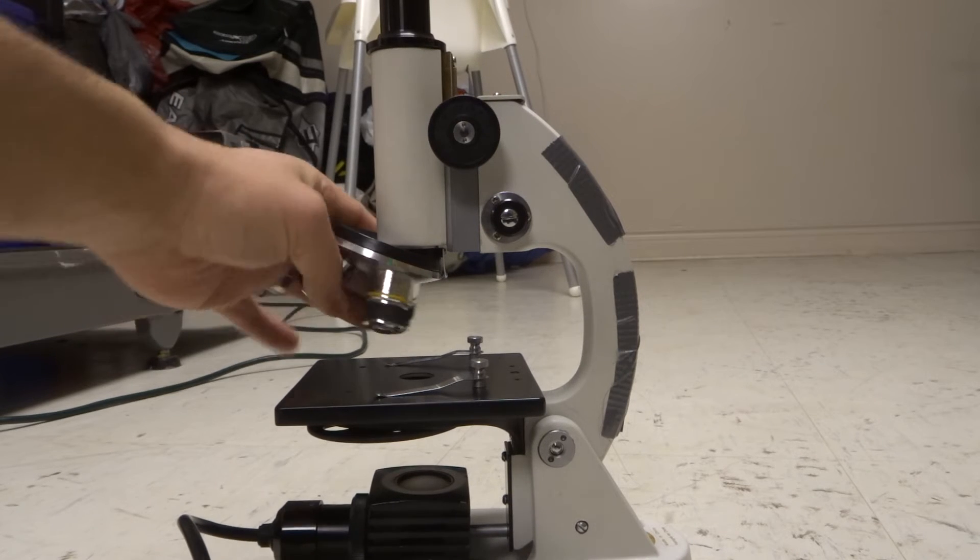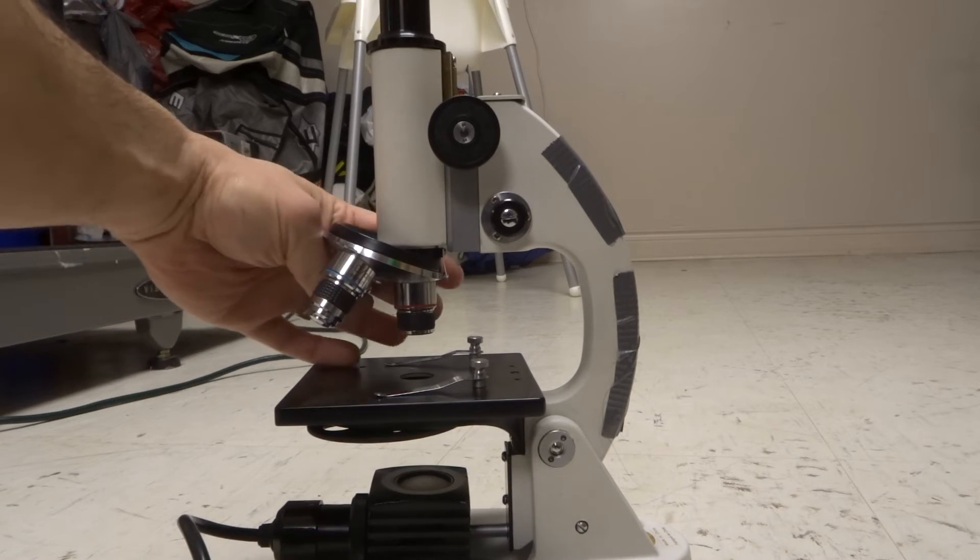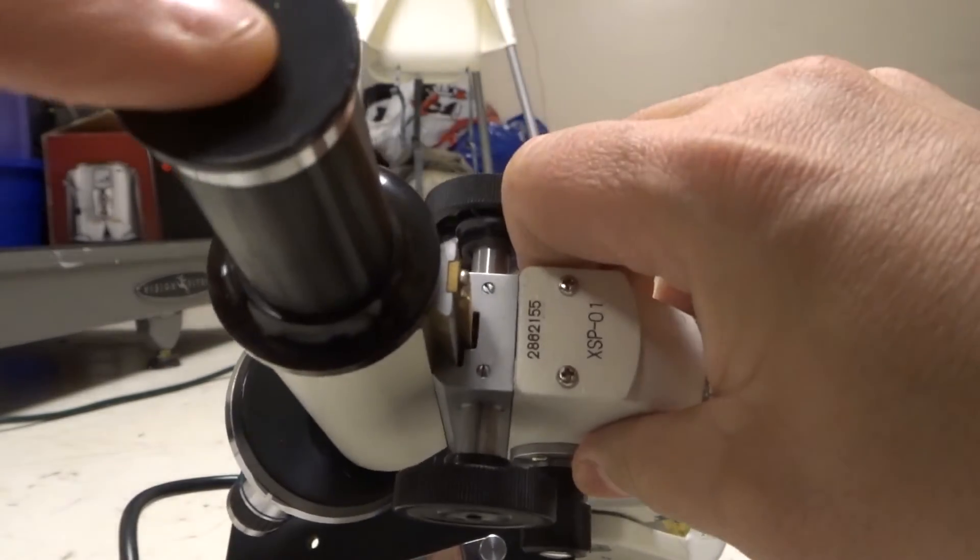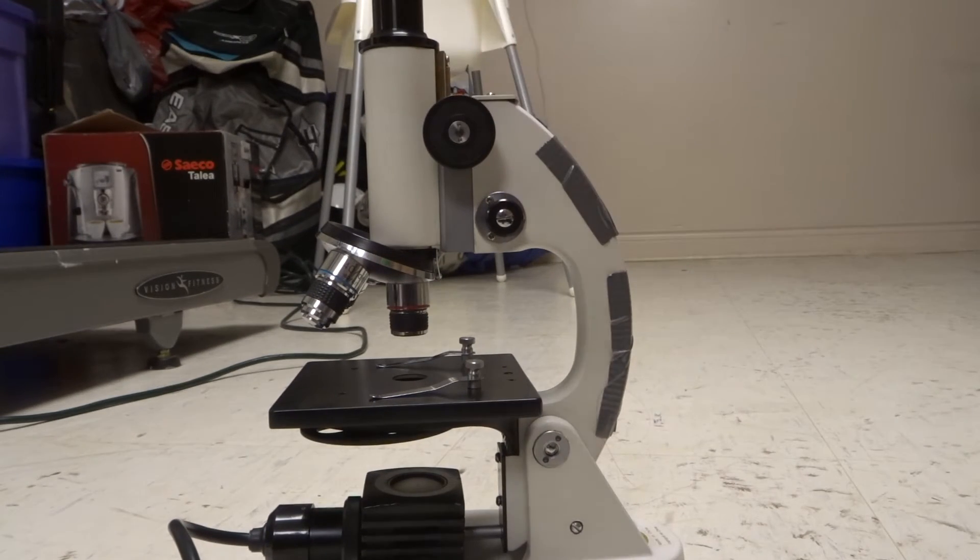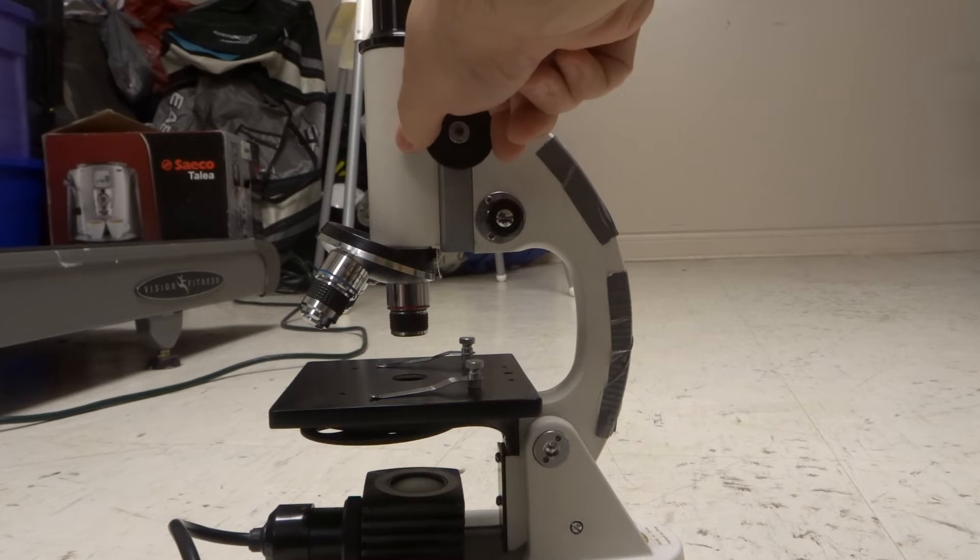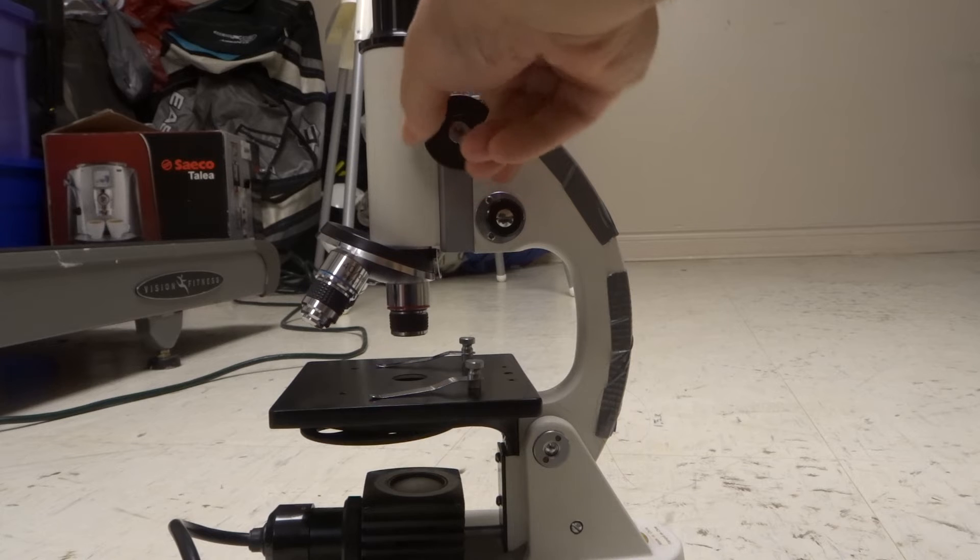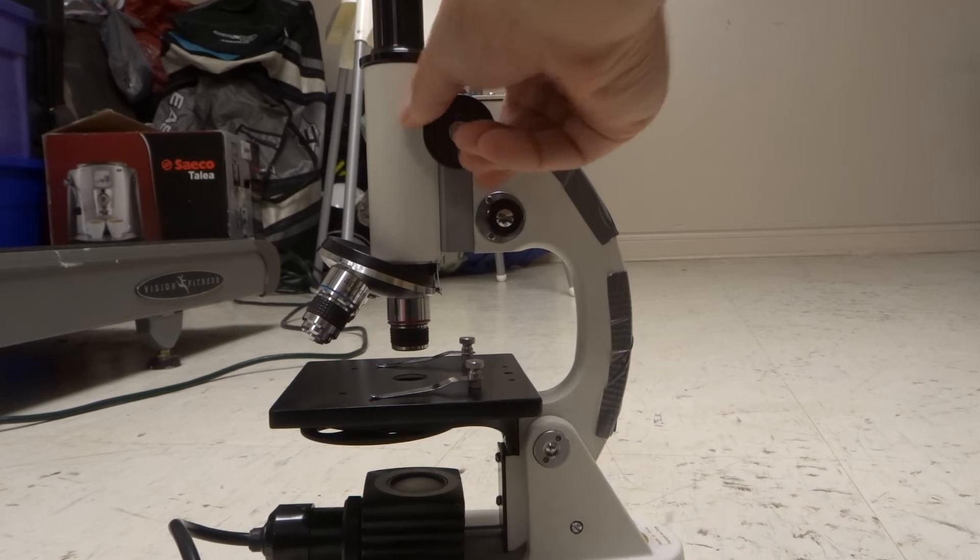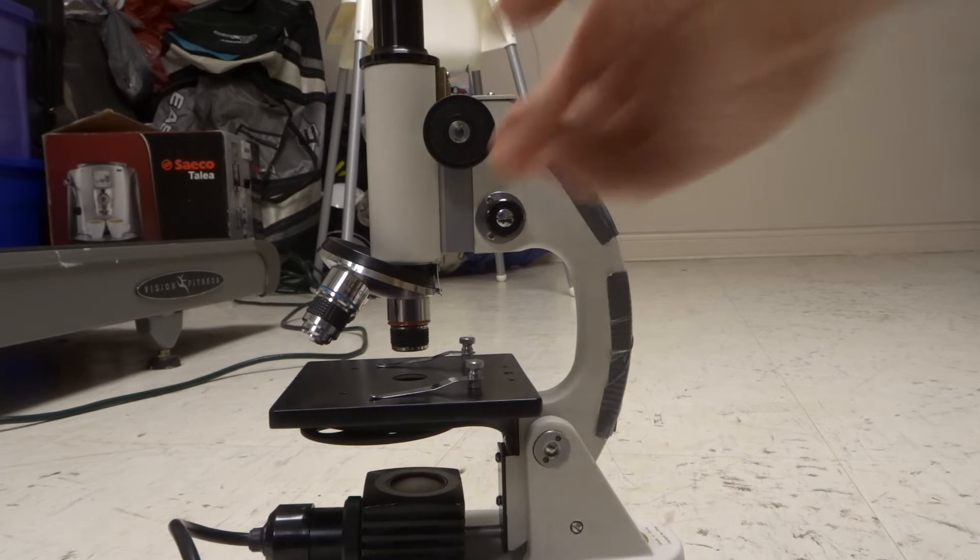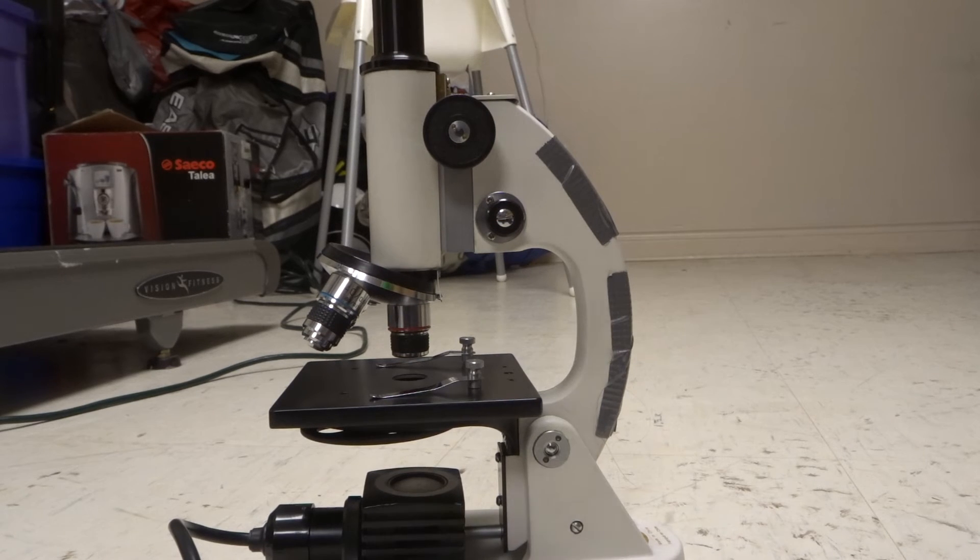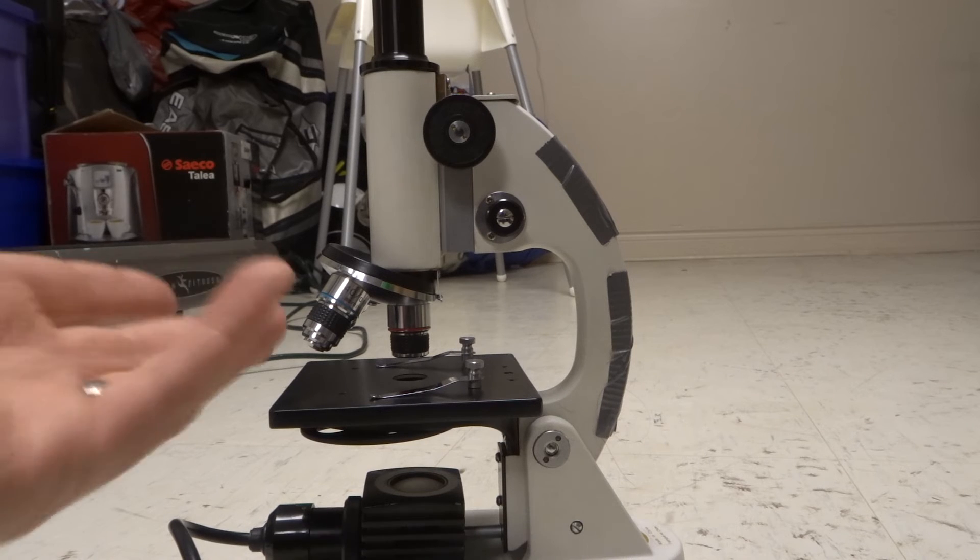So choose whichever one you want. These are called the objective lenses. You want to choose your objective lens and look through the ocular lens up over here at the top and get your eyeball nice and close to that lens. You want to get a good view inside of the eyepiece at the top there. And you want to then adjust your coarse adjustment knob. And you want to look through there and see when you can see decently clearly what you have there. So continue adjusting up and down until you get the best clarity that you can get with regards to what you see there.